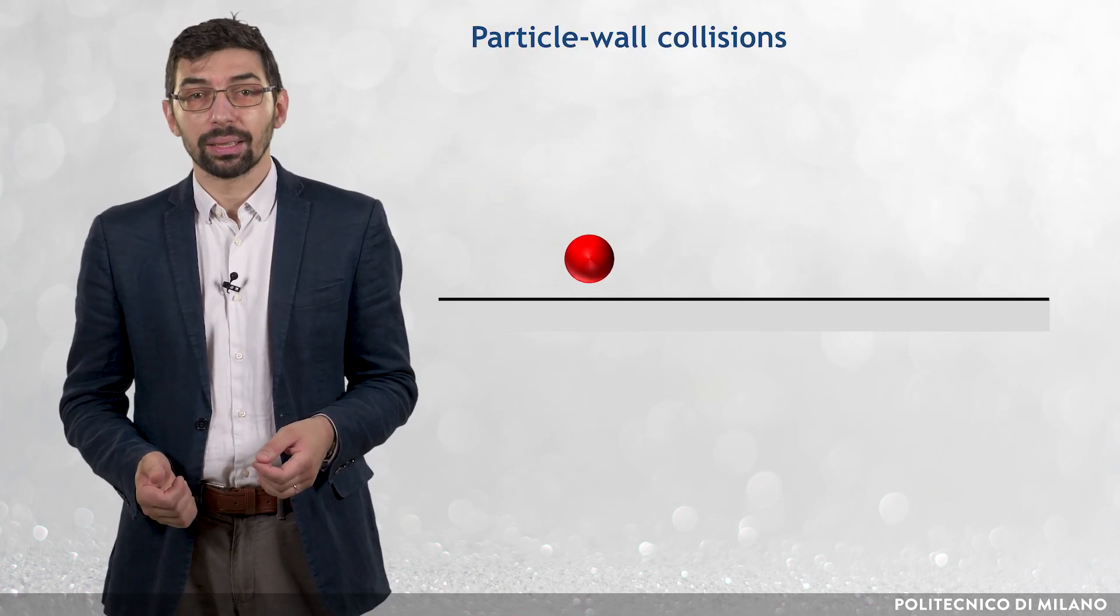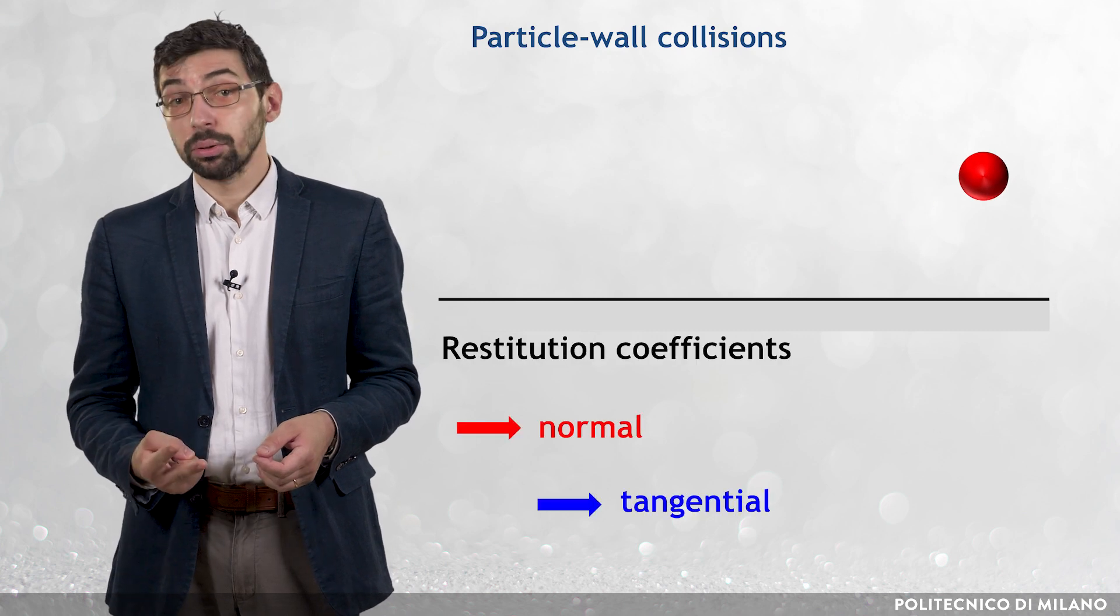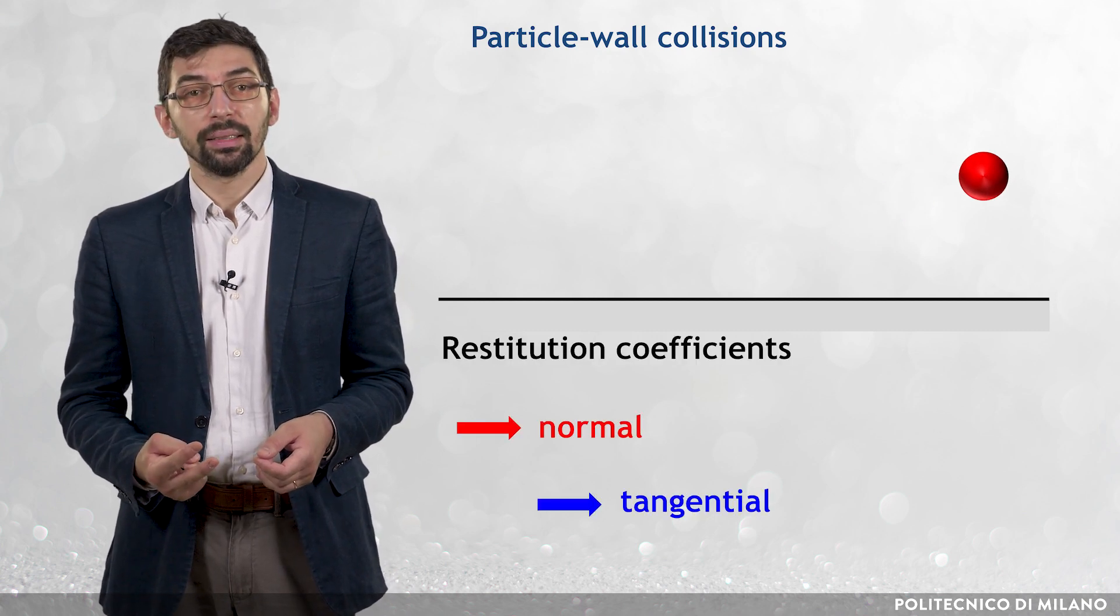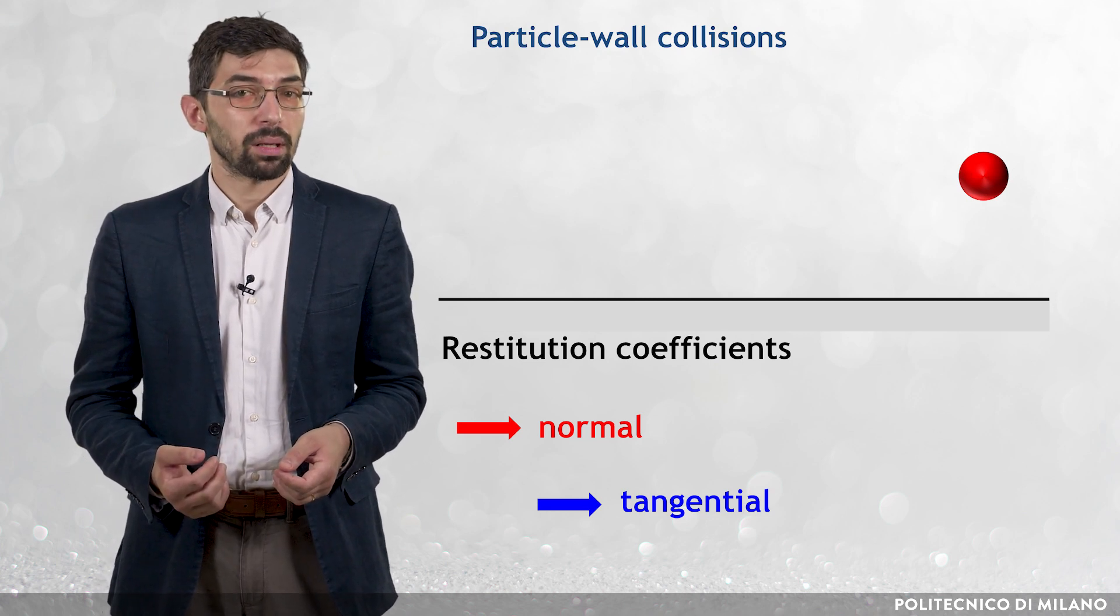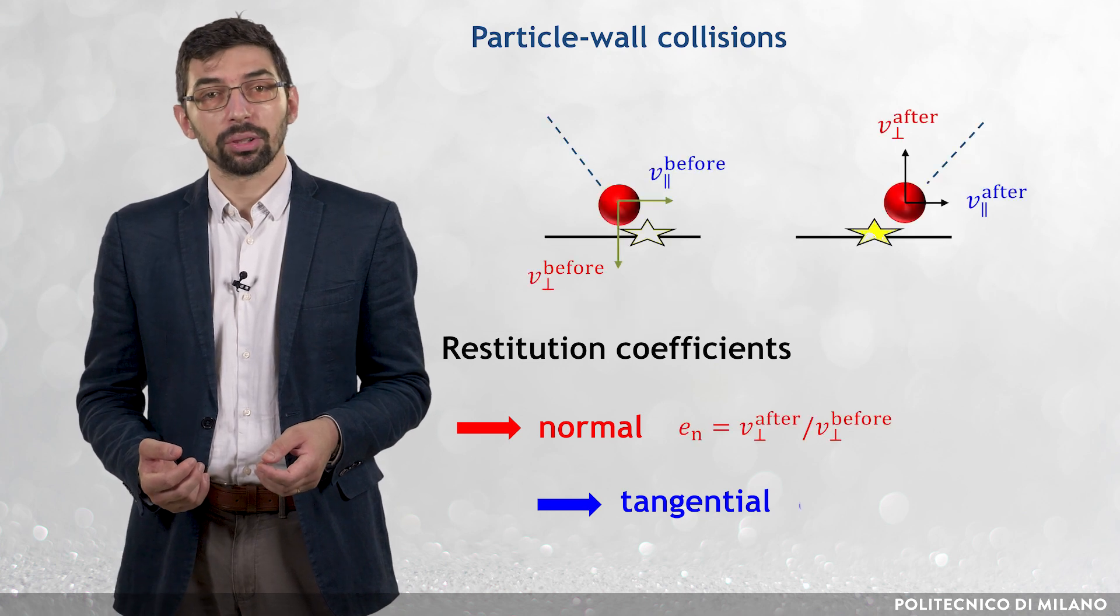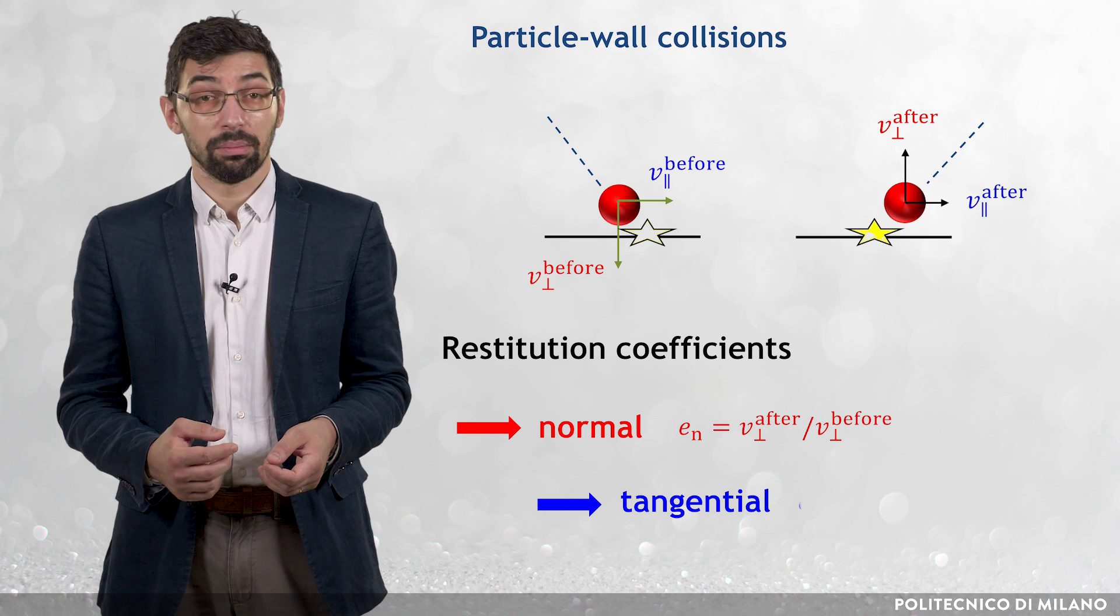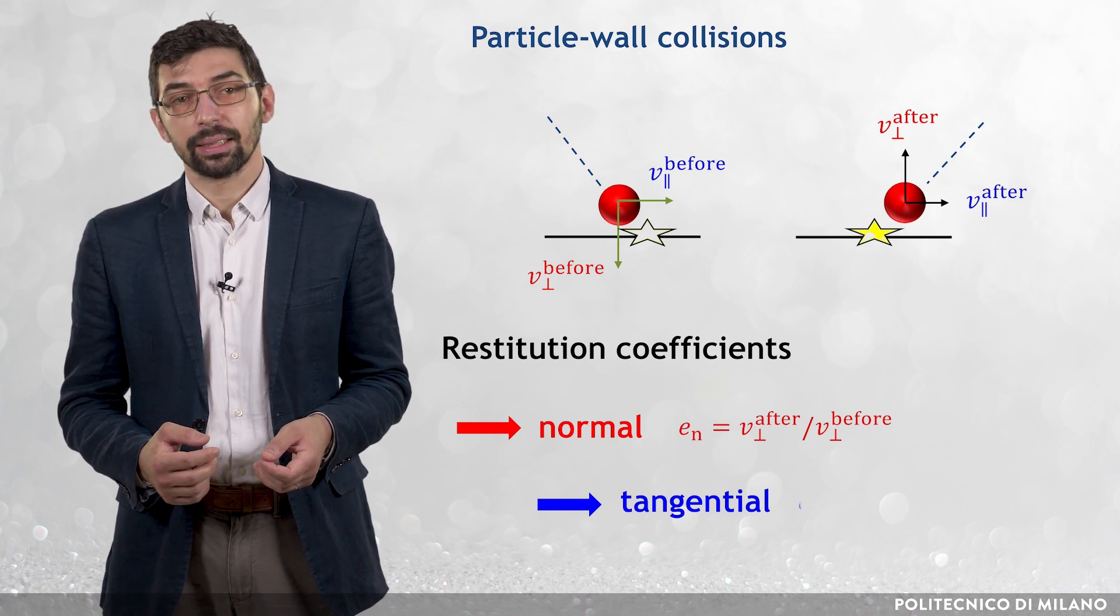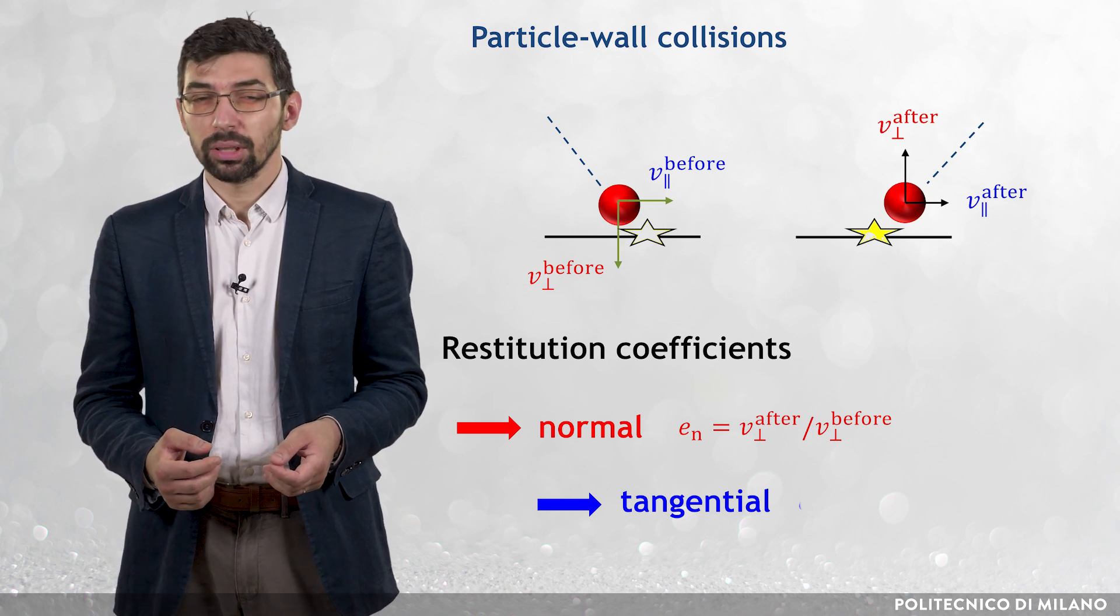Finally, the quick collision between a particle and a solid wall is usually modeled via two restitution coefficients relating the particle velocity after and before the impact. The normal restitution coefficient En is the ratio between the normal particle velocity after and before the impact. The tangential restitution coefficient Et is the analogous parameter for the parallel velocity.